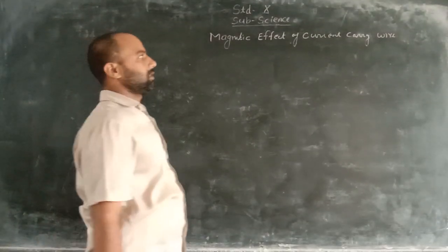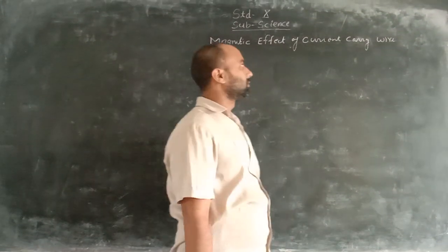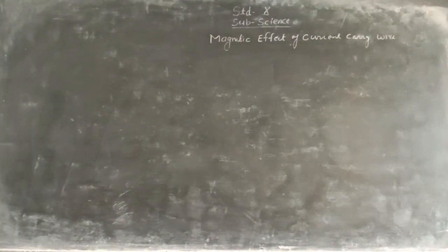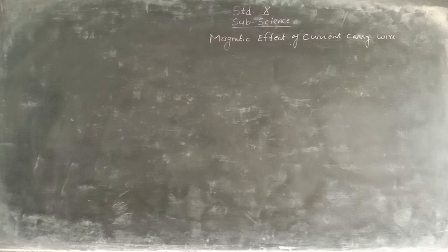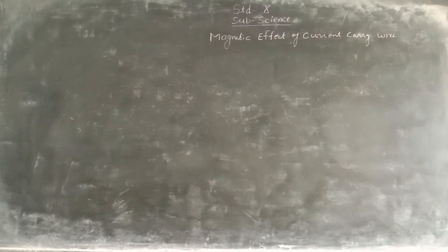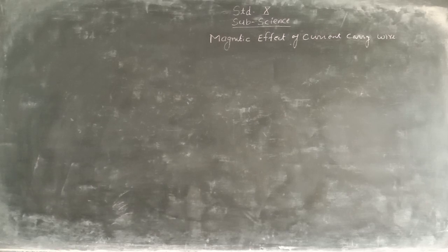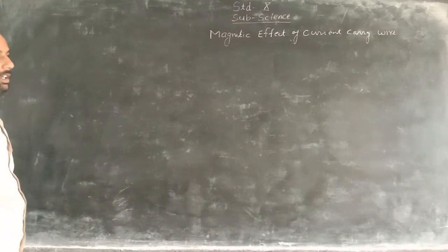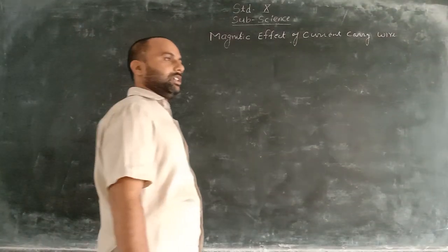Welcome to the Azim Kashi. We have discussed the magnetic effect of current carrying wire. We have to revise how the magnetic field is to be created. After that we have discussed the properties related to the magnetic field lines, and now we have to carry the basic properties that are to be discussed here.